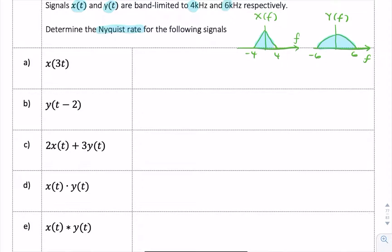So the first question is about X of 3t. So that's called compression in time. When you multiply the independent variable by t, that's called compression in time, and that corresponds to stretching in frequency. So that's the scaling property of the Fourier transform.